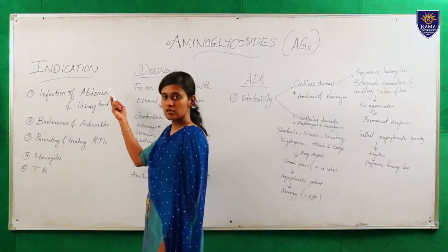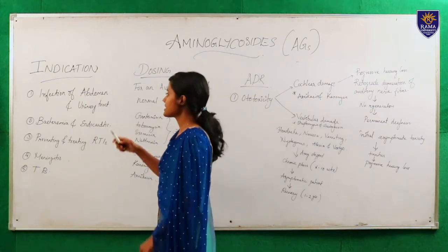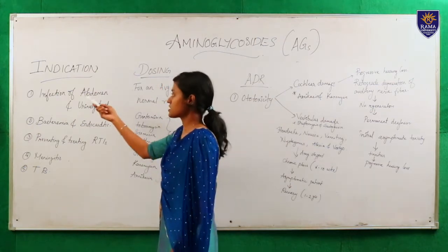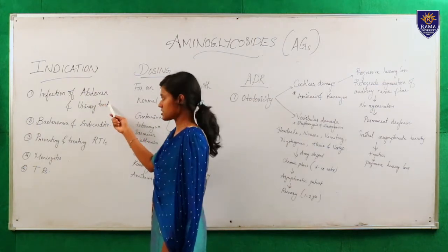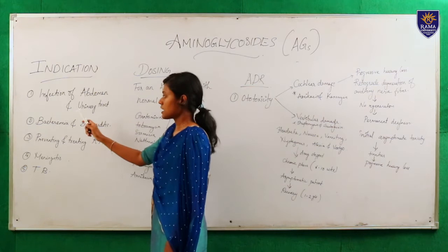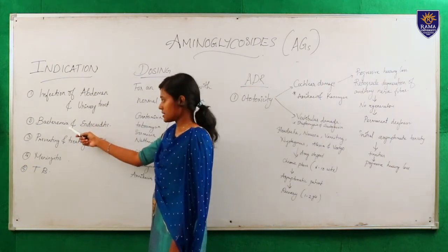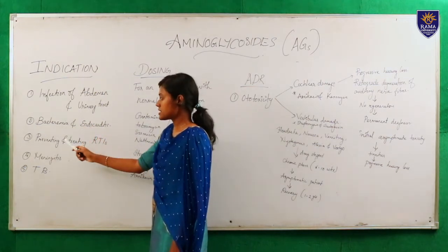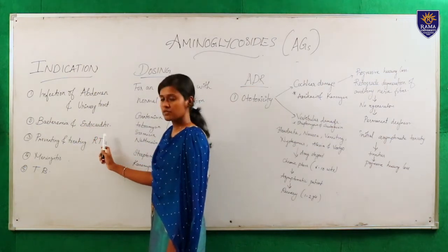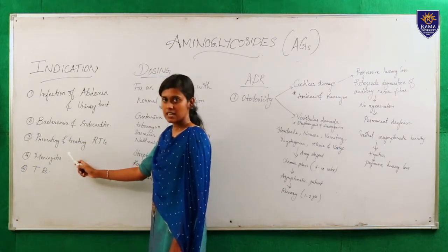Next we shall look at the indications of aminoglycosides. They are usually used to treat infections of the abdomen and urinary tract. They are also used to treat bacteremia, endocarditis, preventing and treating respiratory tract infections, meningitis and tuberculosis.